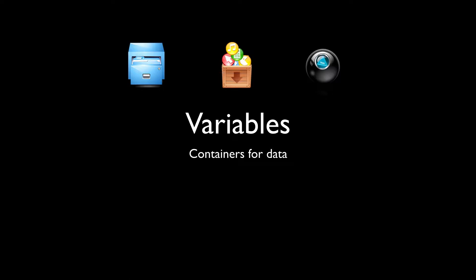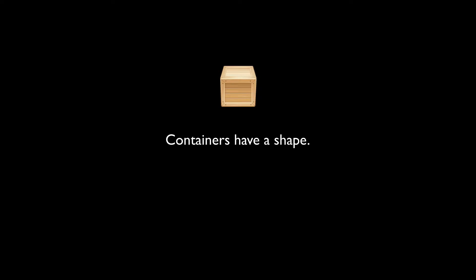You probably know something about variables from other courses. From algebra you know that a variable is essentially x, or y, or z — some abstract letter that refers to a value that can change at any point in time. That's not a bad definition, but in programming we take it a step further. When we talk about variables in programming, we're really talking about containers for data — a location to store your data.